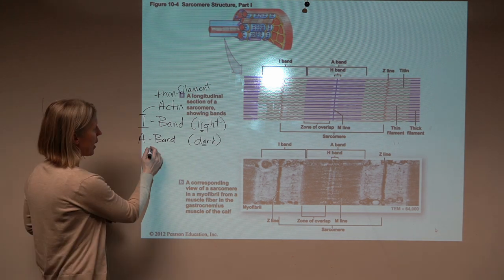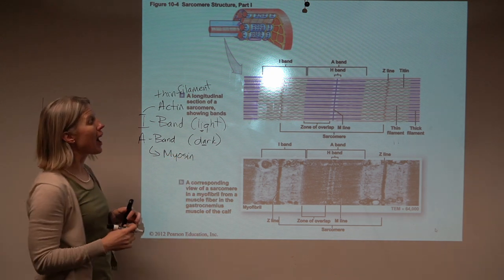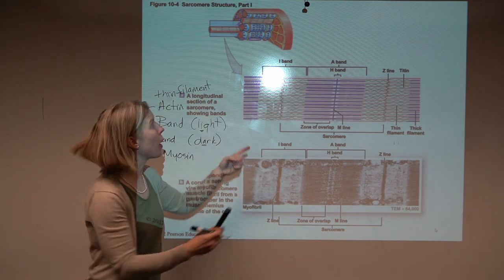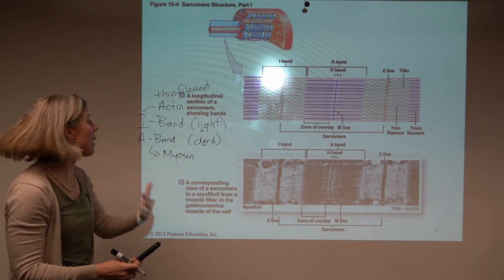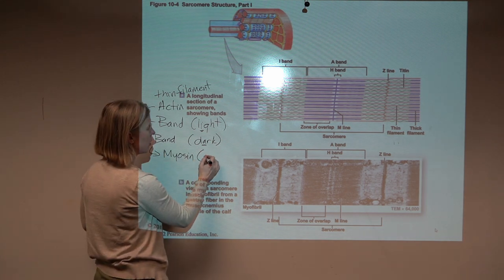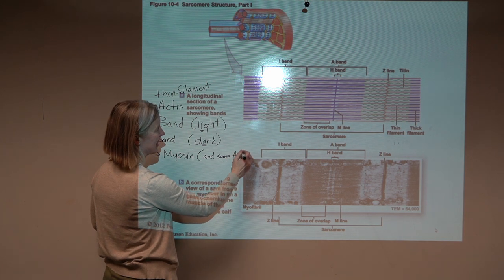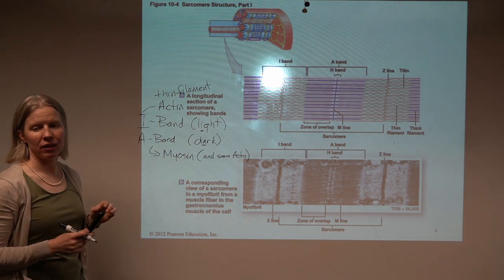The A band then is where we see myosin or myosin and, see the overlap here? There's actin in there as well. But the A band only goes as far as that myosin does. So I'm going to just put in some actin when they're overlapping. So A bands and I bands.